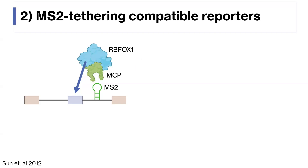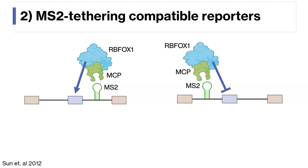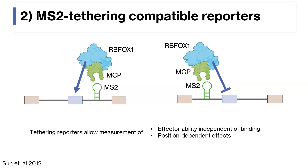In 2012, researchers found that tethering the splicing factor RBFOX1 downstream of an alternatively spliced exon leads to increased inclusion, while tethering it upstream leads to increased skipping. The tethering approach allows us to measure the effector ability of a protein independent of its binding. If we wanted to test hundreds of RBPs, we wouldn't be able to put natural binding sites for all of them into our reporter, so this tethering system allows us to test all the different RBPs under consistent conditions. The tethering also allows for detection of these position-dependent effects, like those discovered for RBFOX1, which tend to be really widespread among splicing factors.